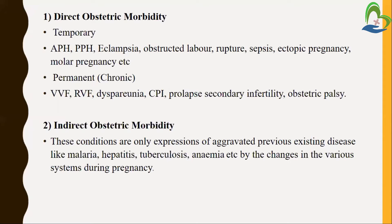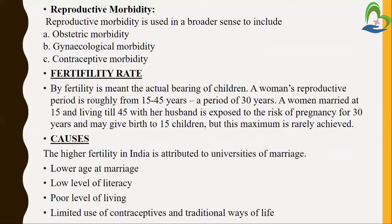Next is reproductive morbidity. It is used in a broader sense to include obstetric morbidity, gynecological morbidity, and contraceptive morbidity. Reproductive morbidity means if the mother has any kind of complication or problem related to the reproductive phase or tract organs — obstetric complications, gynecological dysfunction of any organ, and contraceptive morbidity — all three are included in reproductive morbidity.